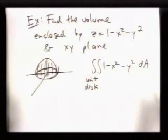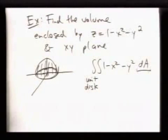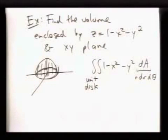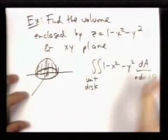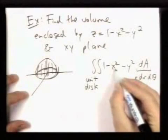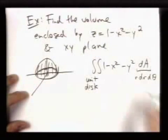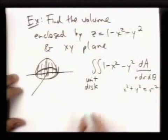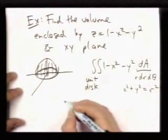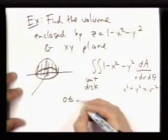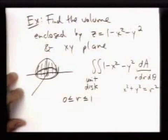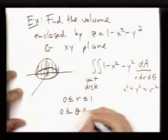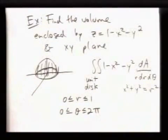The way we describe this, the way we can write this in polar coordinates is like I said, we think of the little change in area as R dr dθ. In polar coordinates, x squared plus y squared is R squared. And the unit disk in polar coordinates can just be described by R is between 0 and 1, and theta is between 0 and 2π.